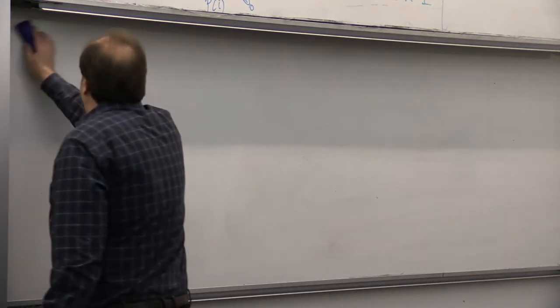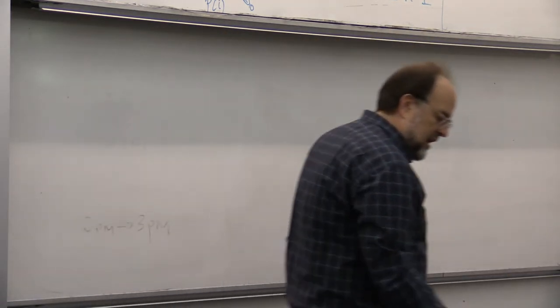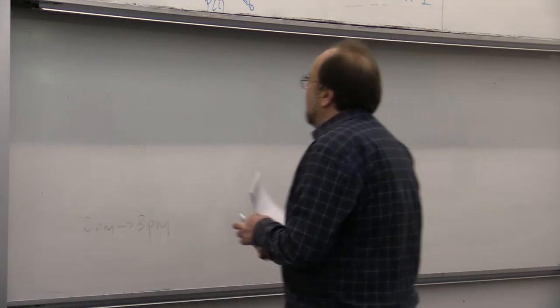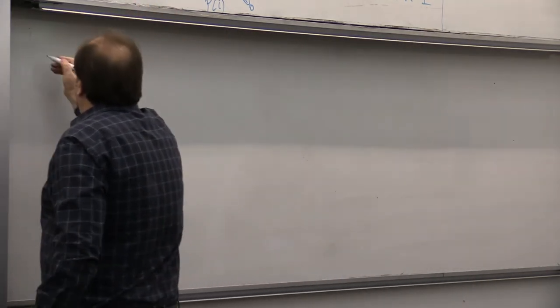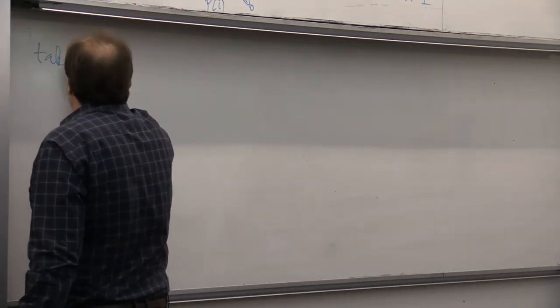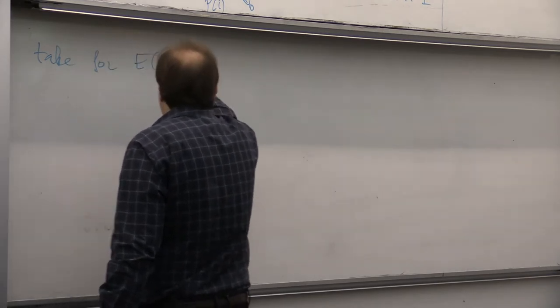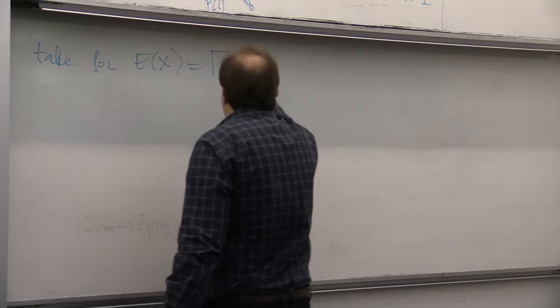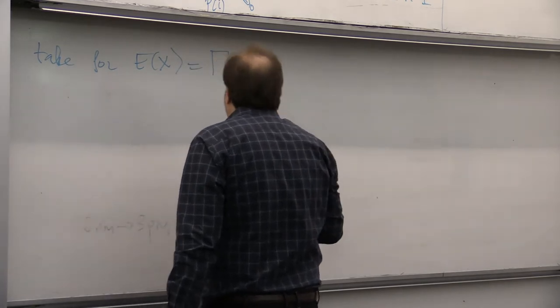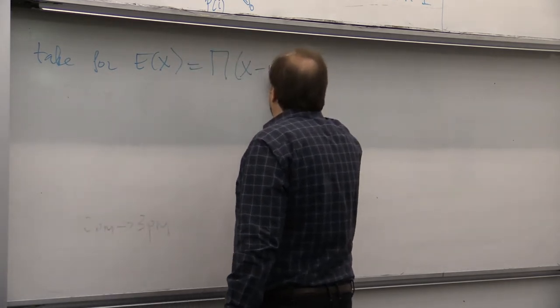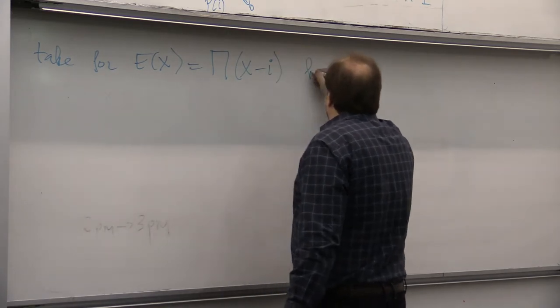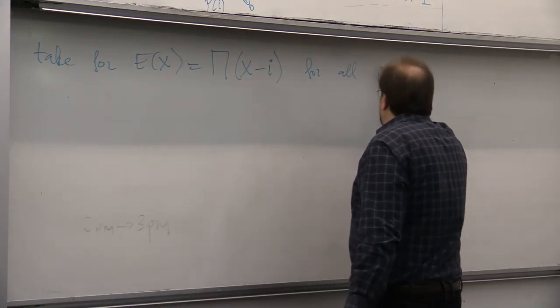Sorry, I didn't tell you what Q and P are. So, take for E of X simply to be the product X minus I for all I.